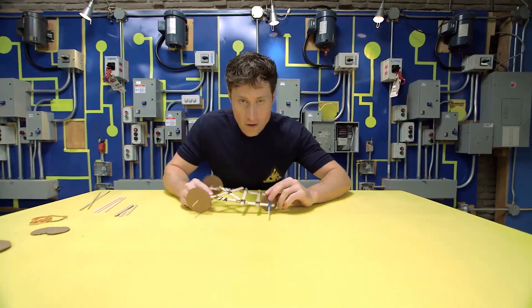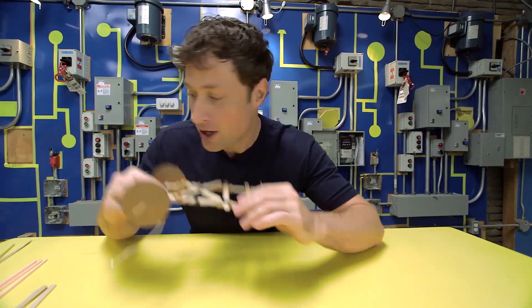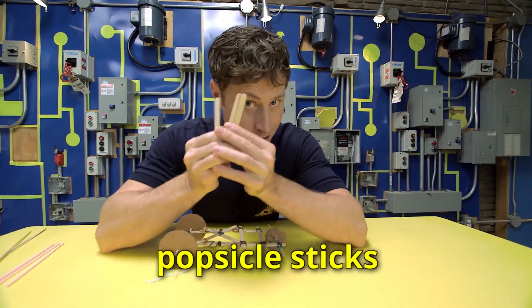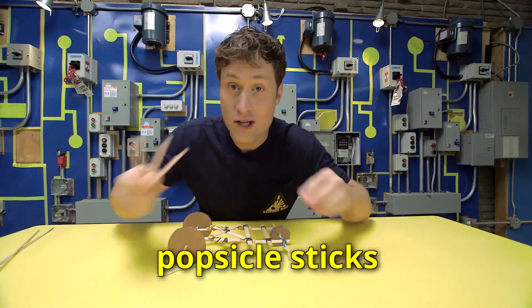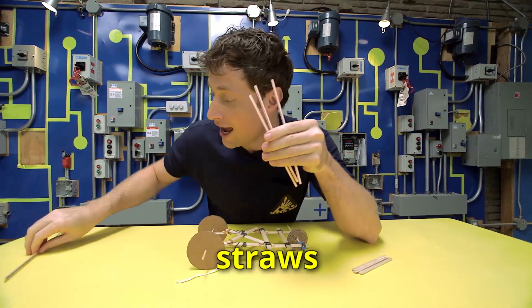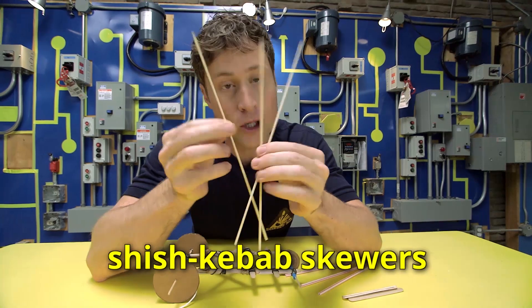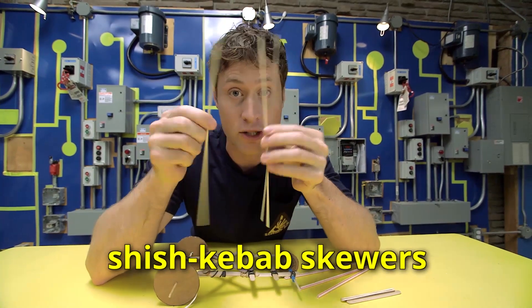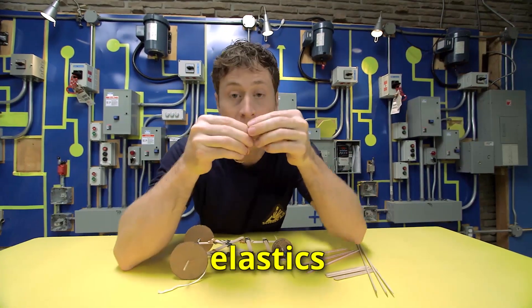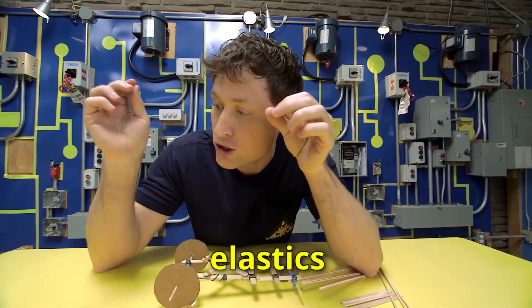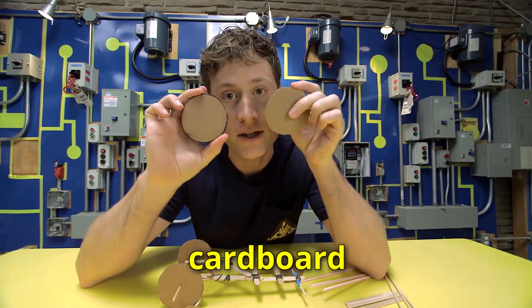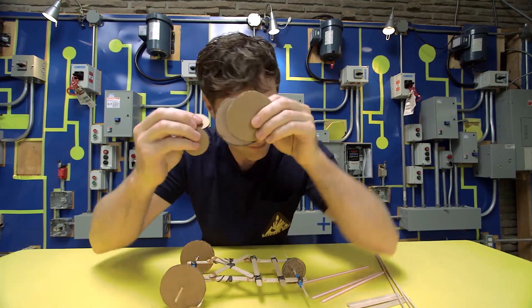Here is everything you need to build your very own dragster: some popsicle sticks, straws, shish kebab skewers, elastics, and of course wheels. I just cut my wheels out of cardboard.